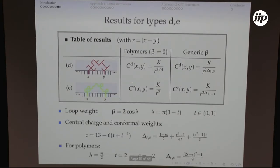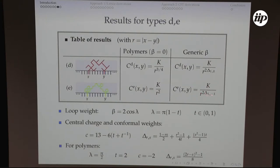For type D, the cluster correlator has a critical exponent of 3/8 for polymers, and for generic beta it's delta_{1,0}. For type E, when we had the loop correlator, the exponent is 1, and for generic values it's delta_{1,-1}.